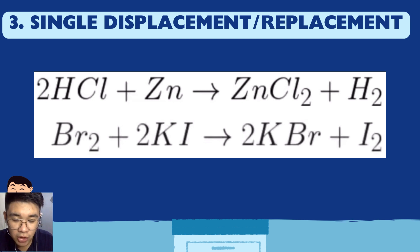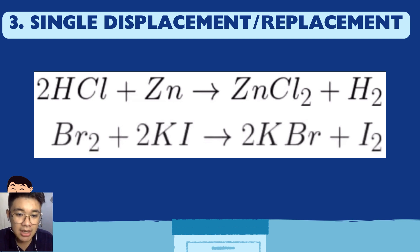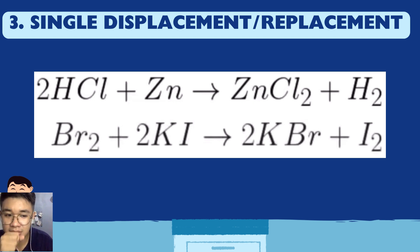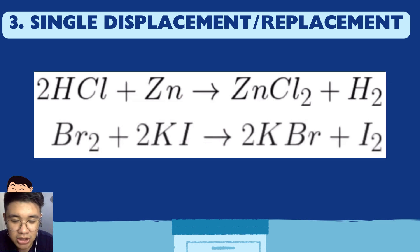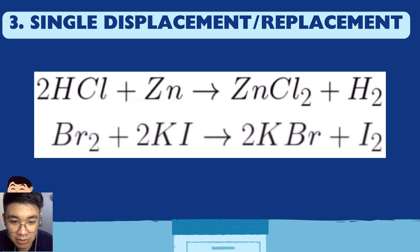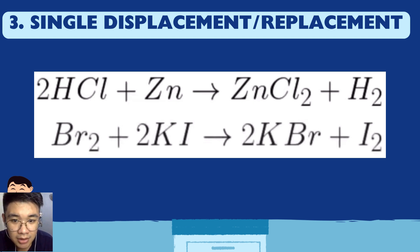Second example: CBr2 + KI (potassium iodide) → KBr (potassium bromide) + I2 (iodine). Notice that bromine replaced iodine's place in the compound. On the product side, potassium's new partner is bromine, and iodine is released. That's basically how single displacement or replacement reaction works.